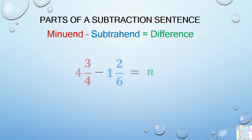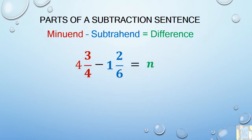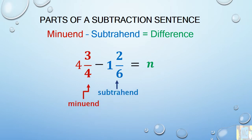In the problem 4 and 3 fourths minus 1 and 2 sixths equals n, the number 4 and 3 fourths is the minuend, the number 1 and 2 sixths is the subtrahend, and the letter n is the difference.